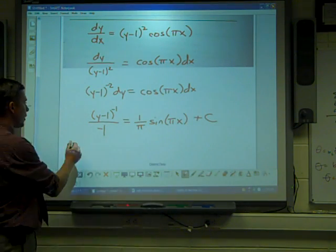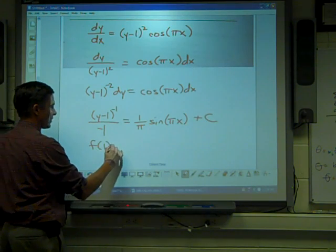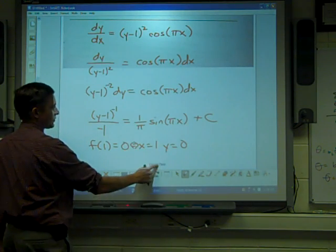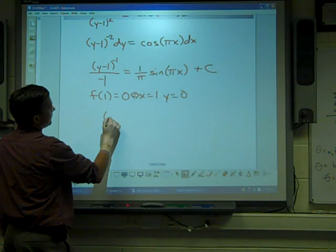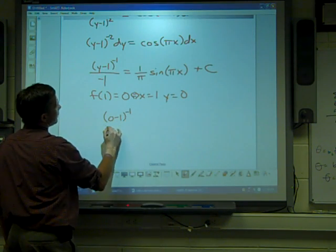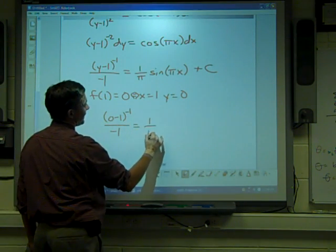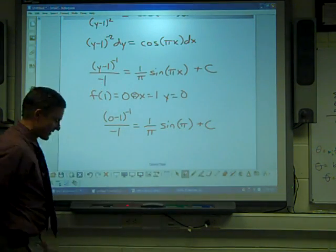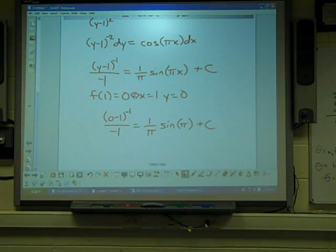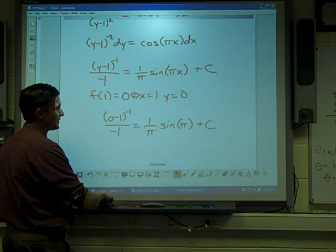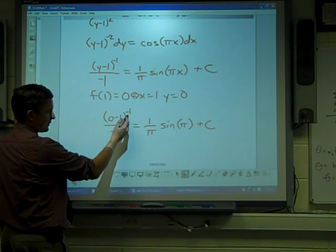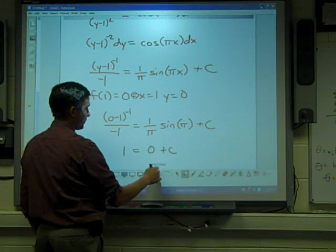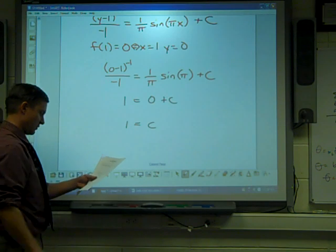Now, I use my initial condition, which was f(1) = 0. So, when x is 1, y is 0. And sometimes it helps to actually write that point. So, you just don't get confused. So, I get (-1)^(-1)/(-1) equals (1/π)sin(π) + c. Now, this is a non-calculator problem. So, you sure expect this to work out pretty for you. And it really does. You get the, this will be -1/-1, which is 1 equals. This is 0. So, 0 + c. So, c is 1.